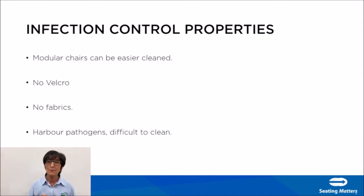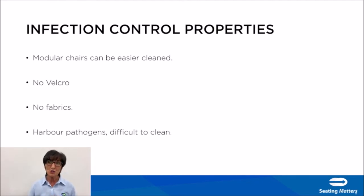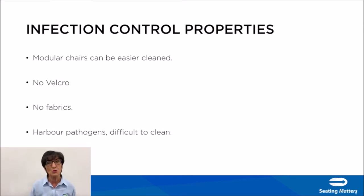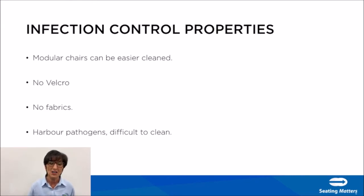Other infection control properties to consider: a modular chair is much easier to clean because you can move the arms out, take the cushion off, and get into all the nooks and crannies that might harbour infection. Velcro is not recommended because pathogens and bacteria tend to stick to it and it is very difficult to clean. Fabrics are also not recommended as they harbour pathogens and are difficult to clean — vinyl is much easier.